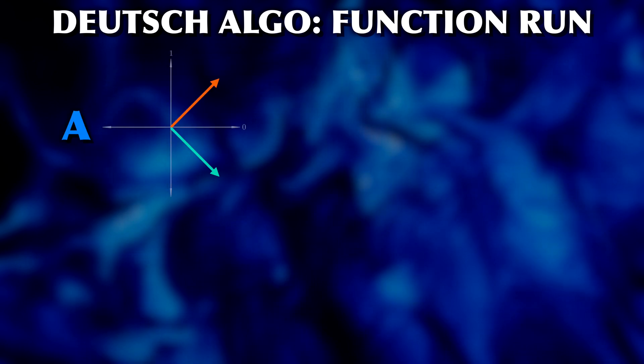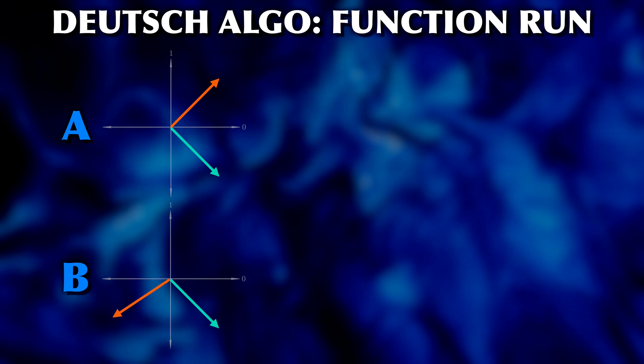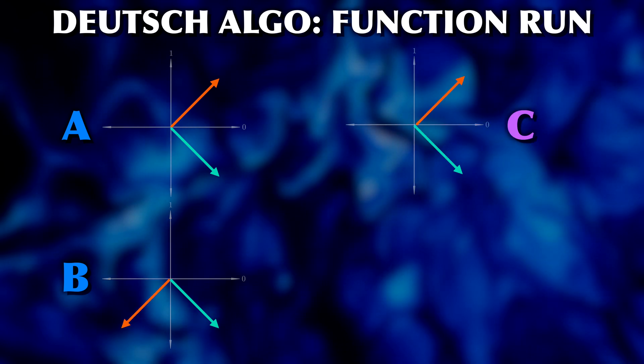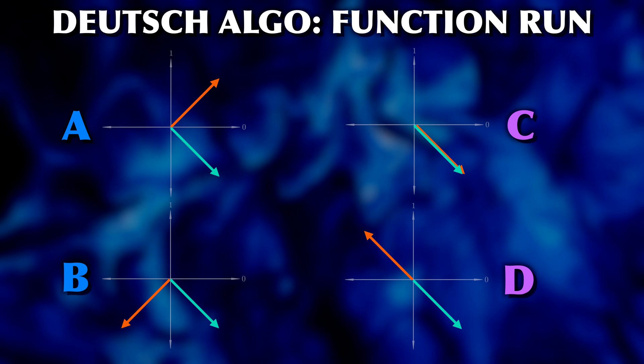In case a, nothing changes. In case b, qubit 1 is rotated by 180 degrees. In case c, qubit 1 is rotated by minus 90 degrees. And in case d by plus 90 degrees.